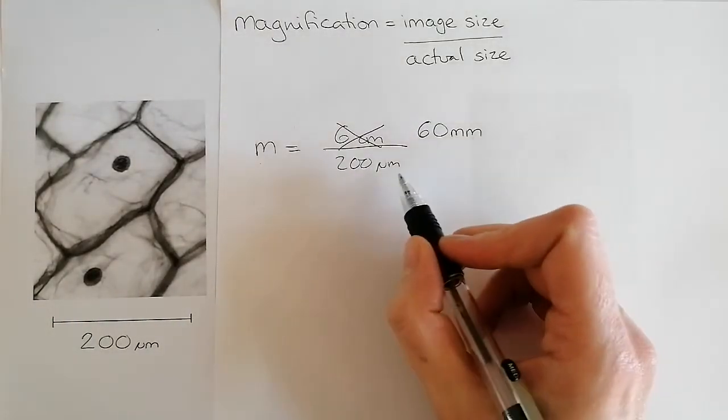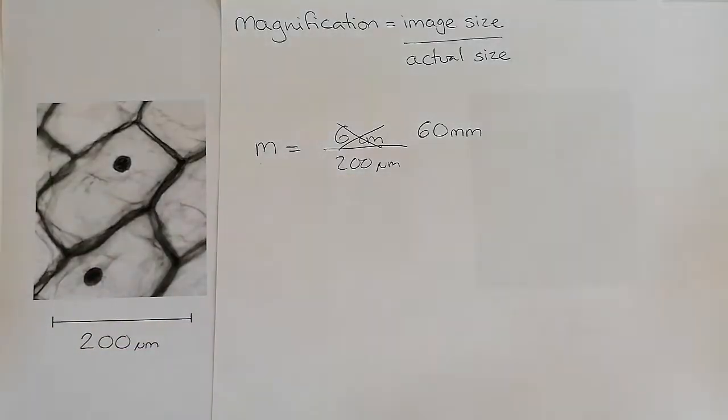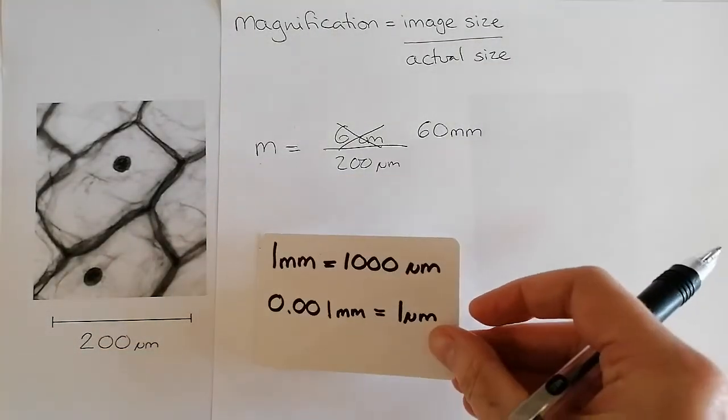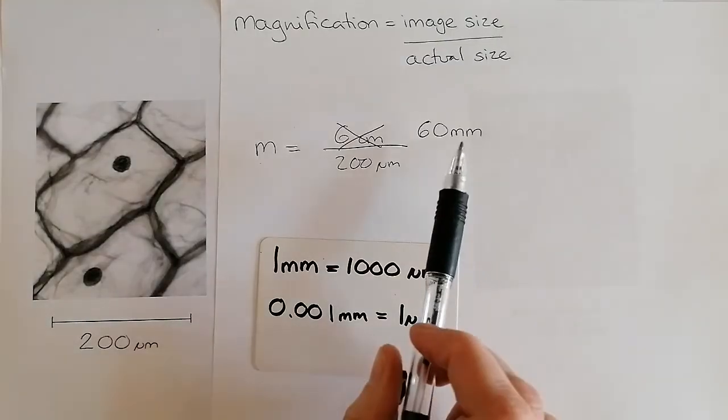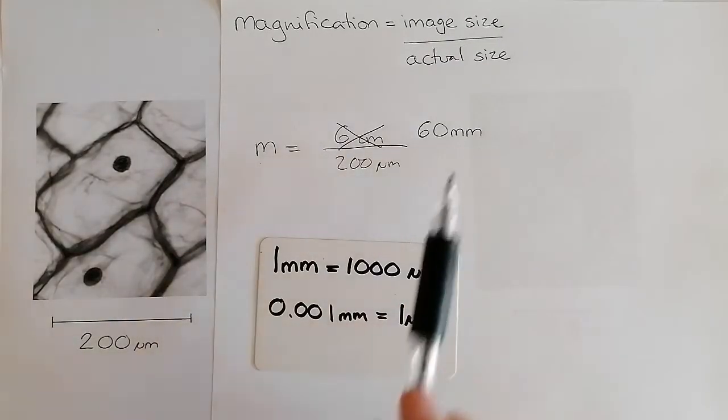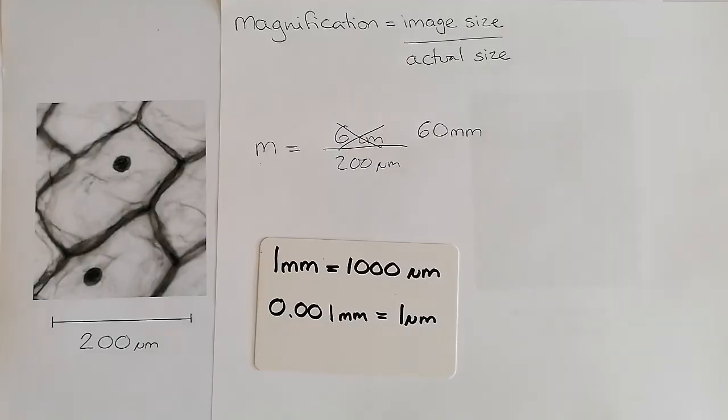We need to get millimeters into micrometers. Now, 1 millimeter is 1000 micrometers, and 0.001 millimeters is 1 micrometer. So if we're wanting to change this into micrometers, we're expecting it to be a big number.